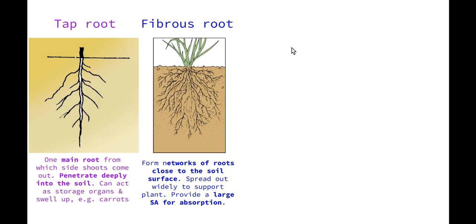The next type are fibrous roots, which form a network of roots close to the soil surface. While tap roots have a single main root that shoots straight down into the soil, fibrous roots branch out like little fingers that spread out close to the surface. They spread out to support the plant but also to provide a large surface area for absorption of water. These types of plants are usually found in areas where we don't get much rain, so when it does rain, there's a nice surface area of roots towards the top of the soil that can draw as much water in as possible.